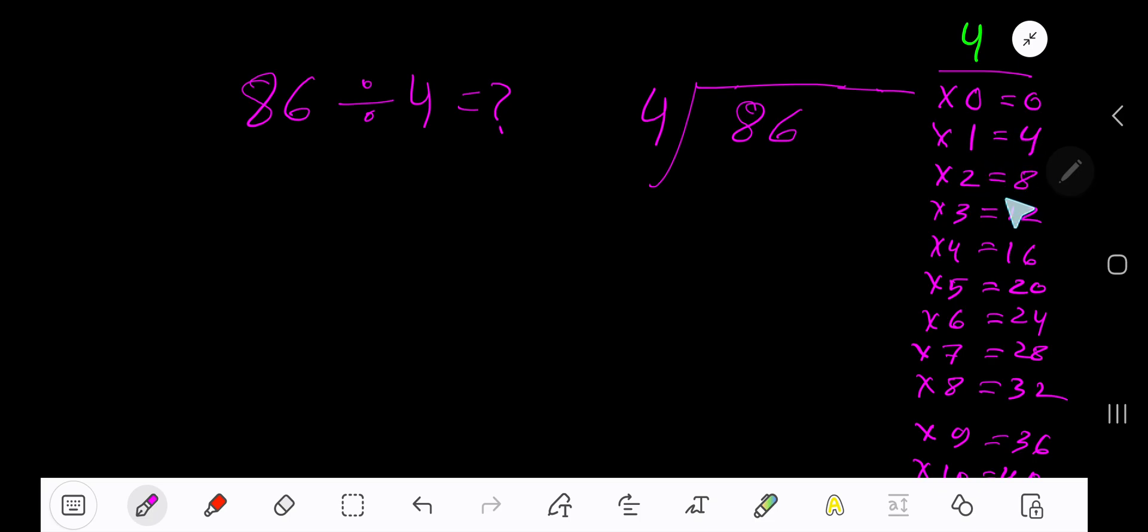4 times 0 is 0. 4 times 1 is 4. 4 times 2 is 8. To find out the multiplication table of 4, just add 4 with the previous step. 0 plus 4 is 4. 4 plus 4 is 8.